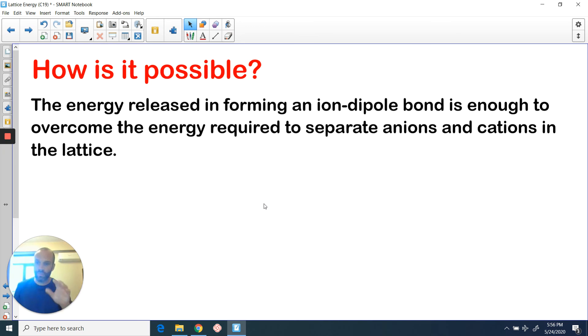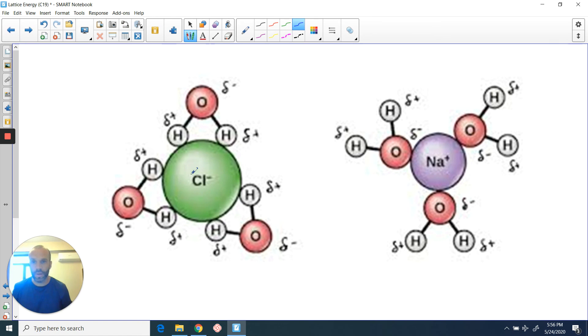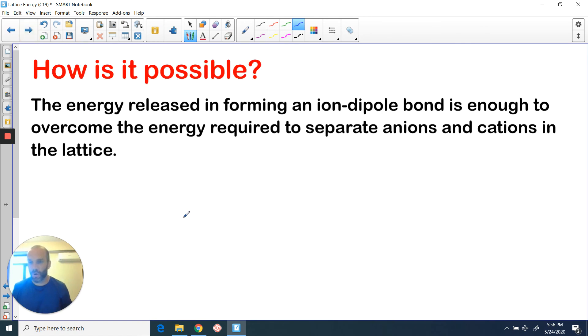And just to give values to that, let's imagine sodium chloride, because that's the one we were just looking at. Now, this has a lattice energy of, I think, just under 1000. It's a minus 787 kilojoules per mole. So this is how much energy is required to actually separate the ions. So what this means is in the actual forming of bonds between the water and the ions, and we call that an ion-dipole bond.